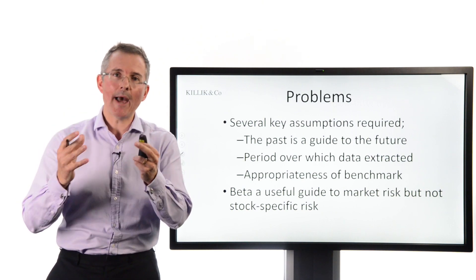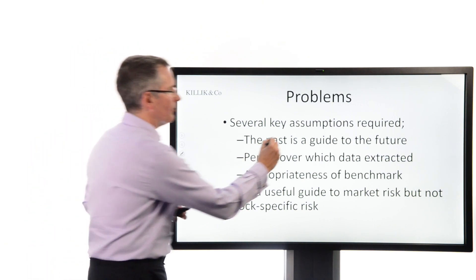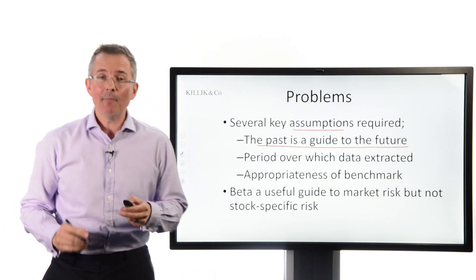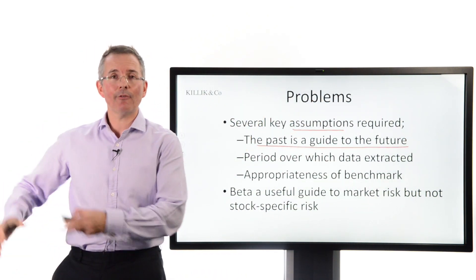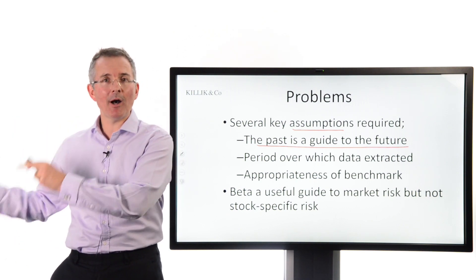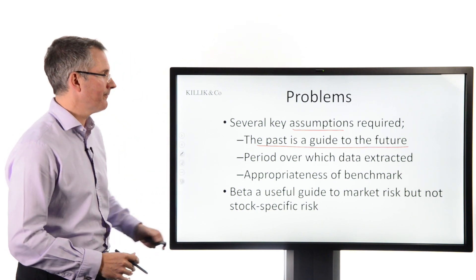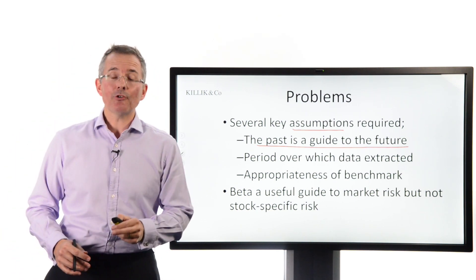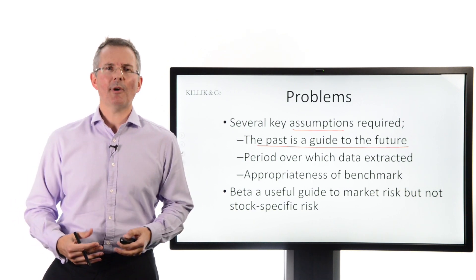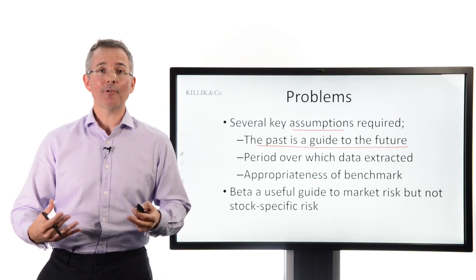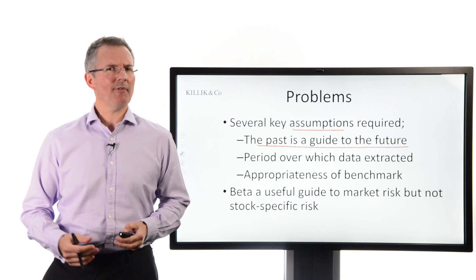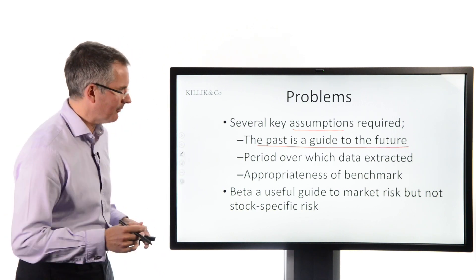What's wrong with beta, or what do you need to be aware of? It makes a lot of assumptions — the most important being that the past is a guide to the future, which may or may not hold. The problem is you have to look backwards to calculate it. Also, you can get different betas for the same stock on the same day from different providers, because they use different calculation methods. So it's sensible to ask how the beta was calculated and whether you are comparing apples with apples.